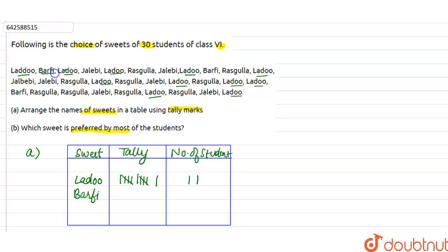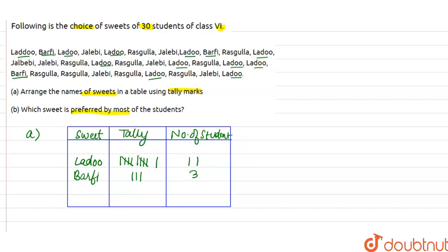So for Burfi, one, then two, we can say two, and then Burfi is three. So we can say frequency for Burfi is three. In tally marks we write Burfi as one, two, three.